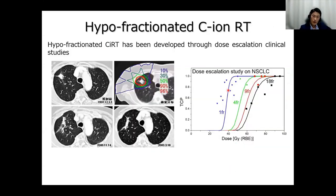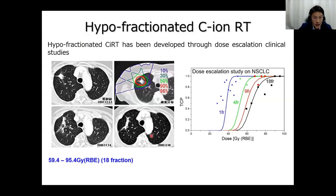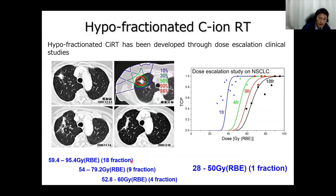This is one example of dose escalation clinical studies to realize hypofractionated carbon ion therapy. For non-small cell lung cancer, we started carbon ion radiation therapy with 18 fractions in six weeks. The number of fractions was reduced to nine fractions, then four fractions, and finally we have realized a single-fraction treatment — a one-day treatment for non-small cell lung cancer.